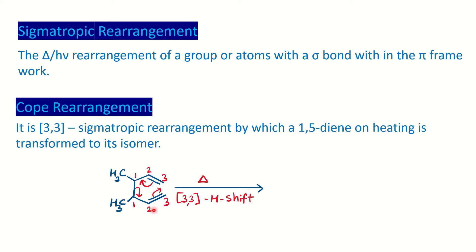Whenever you have a 1,5-diene system, you can notice this is two separate allylic systems. If you divide from the center, the molecule is having two allylic systems. The numbering along the sigma bond is 1-2-3 and 1-2-3. So the sigma bond is going to rearrange from the 1-1 position to the 3-3 position. Therefore, we call it 3-3 sigmatropic rearrangement and it makes a six-membered transition state.